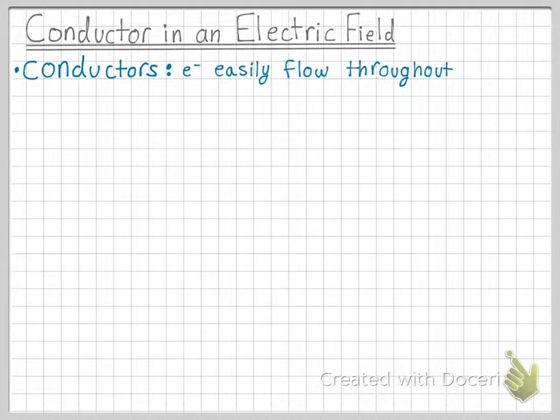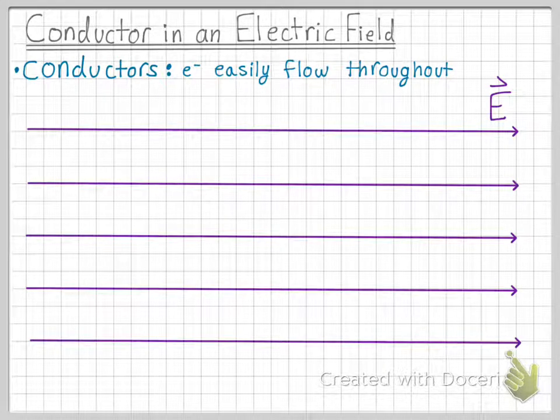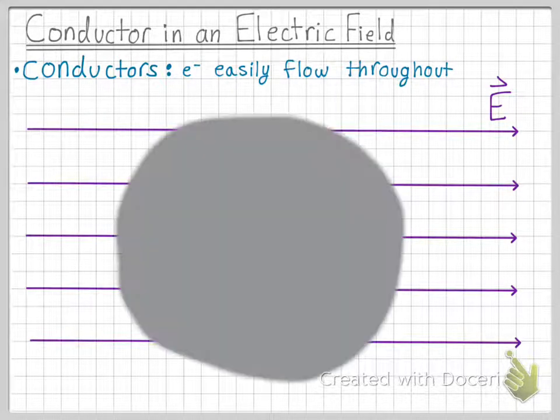So we have a uniform electric field here pointing in the positive x direction. And we are going to place this conductor into the field.